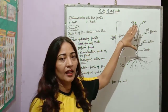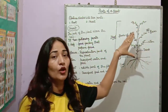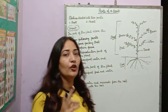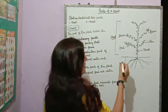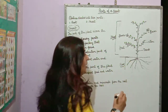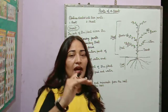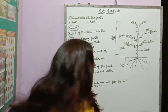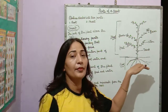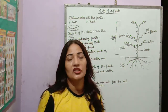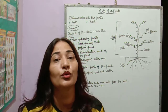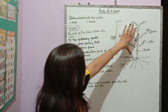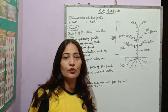Any plant, any tree, any paudha (plant) — it is first divided into two parts. The first part is the one that is visible; from the surface of the ground and above, the part that is visible, we call that shoot system. And the second part which is inside the soil — that is called root system. So this is the root system part, and this is your shoot system.